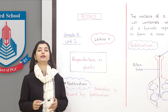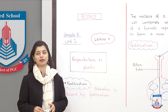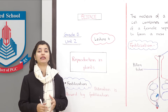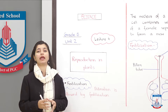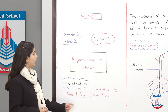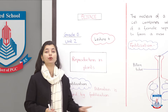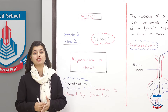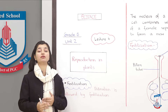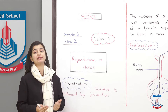What we are trying to understand in today's lecture is what fertilization basically is. This is lecture number 4 for this chapter and we have to understand everything about fertilization. Pollination is followed by fertilization — pollination is the first step of reproduction in plants, and it is followed by the second step, which is fertilization.